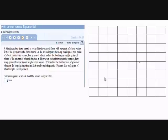Hello everyone, let's look at this grains problem from MyMathLab. The problem states that a king in ancient times agreed to reward the inventor of chess with one grain of wheat on the first of the 64 squares of a chess board. On the right hand side you can see I've created a small chess board with 64 squares, eight by eight squares.